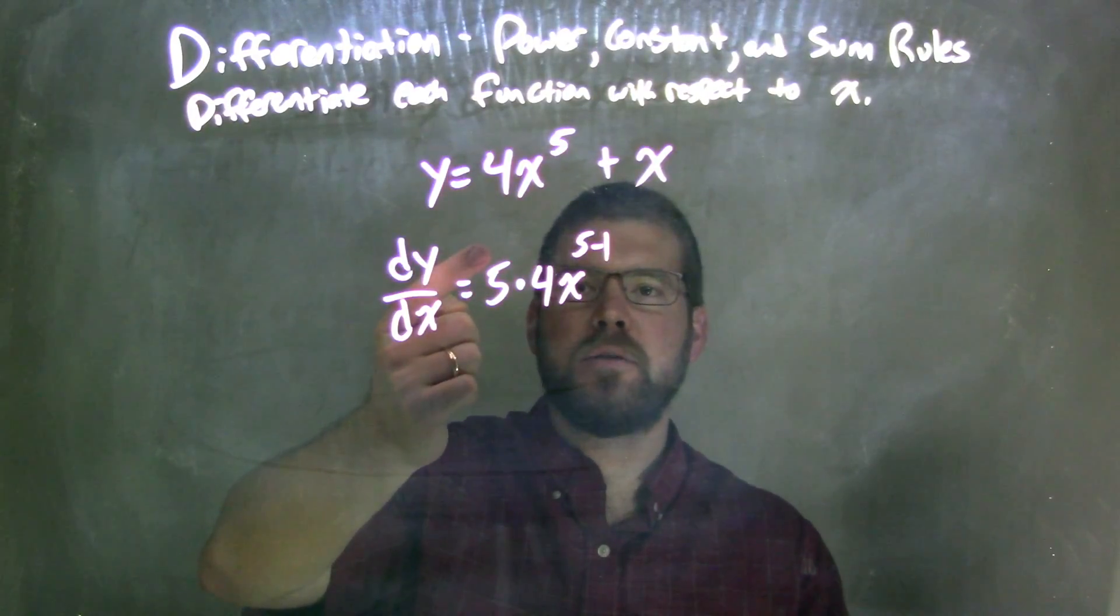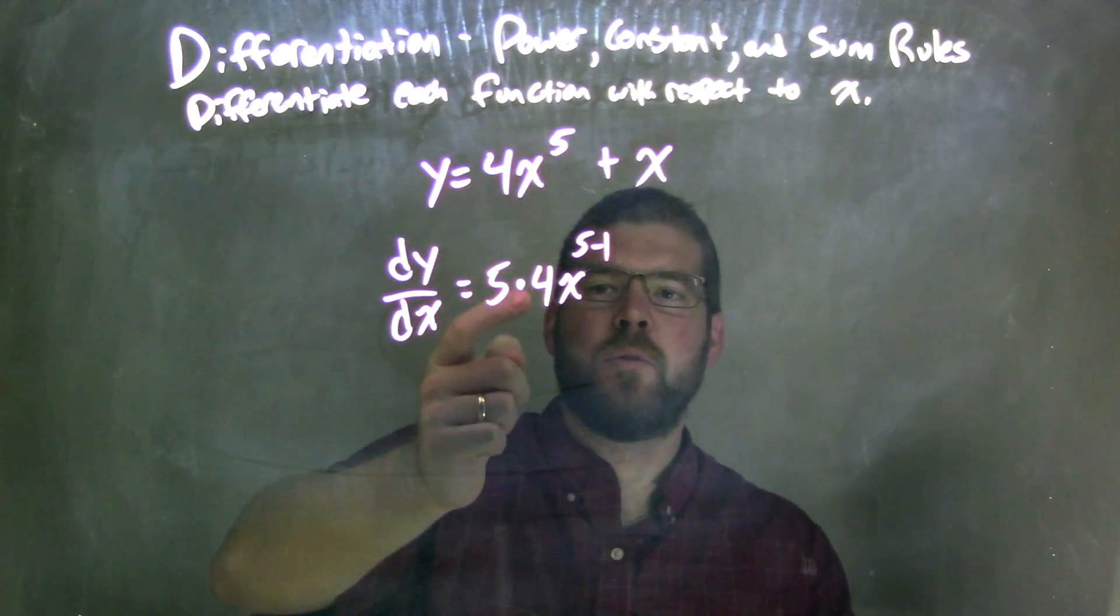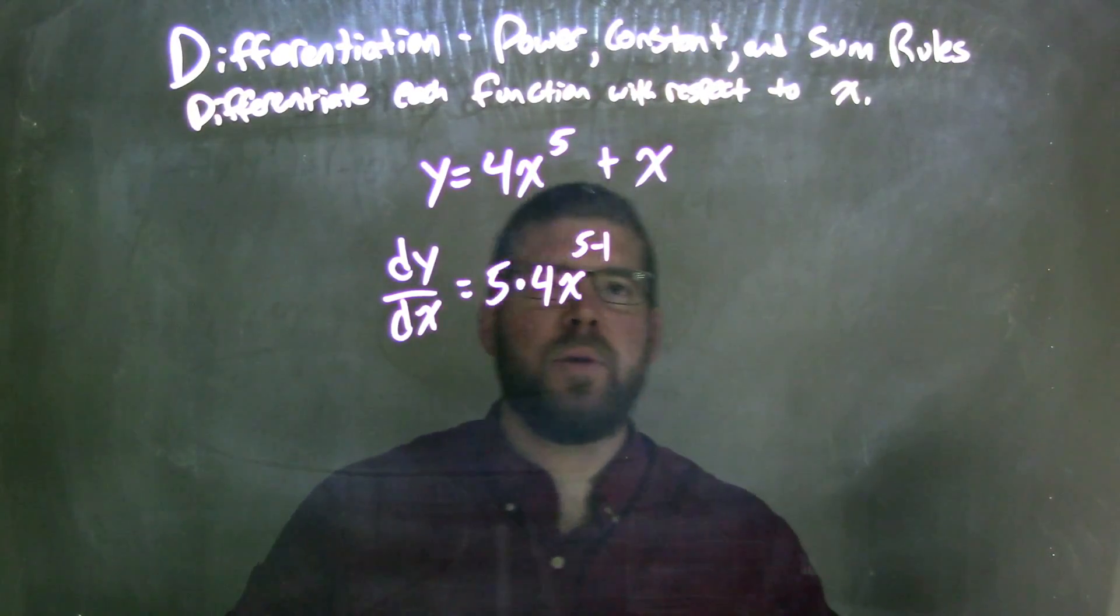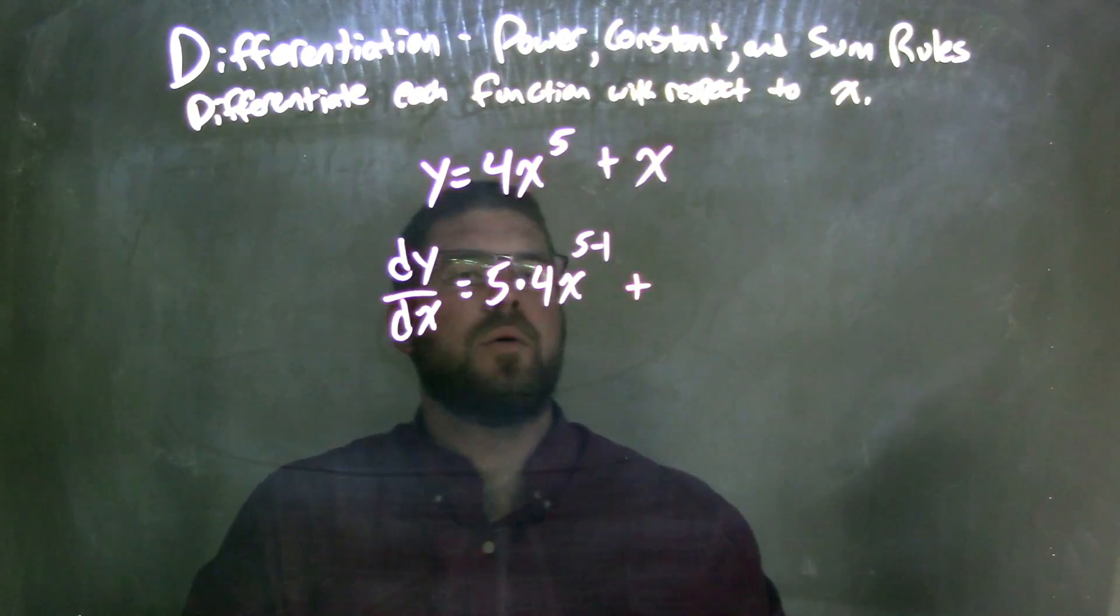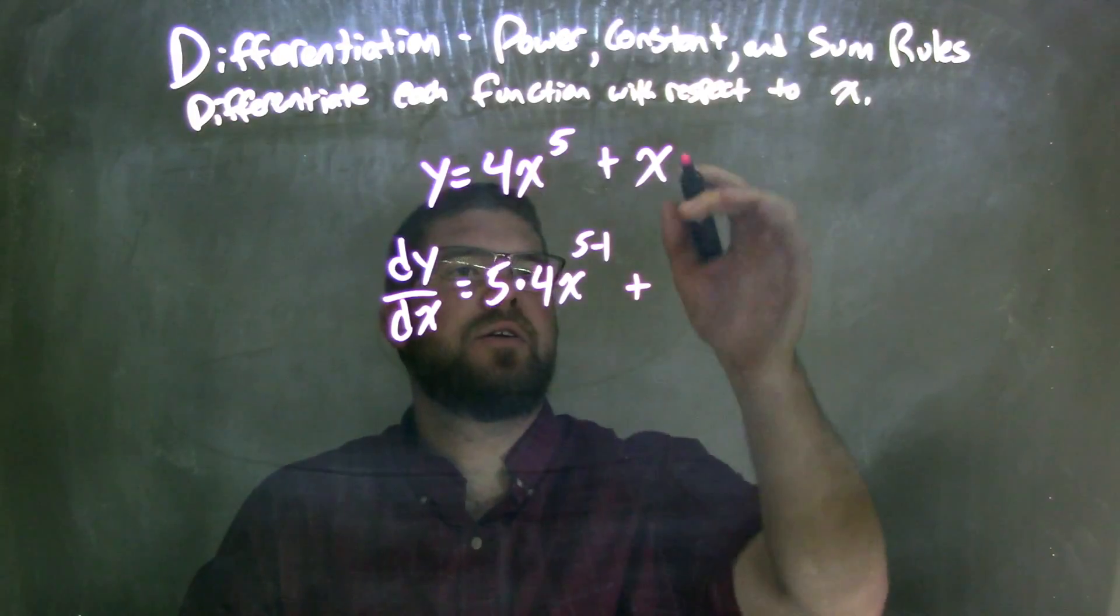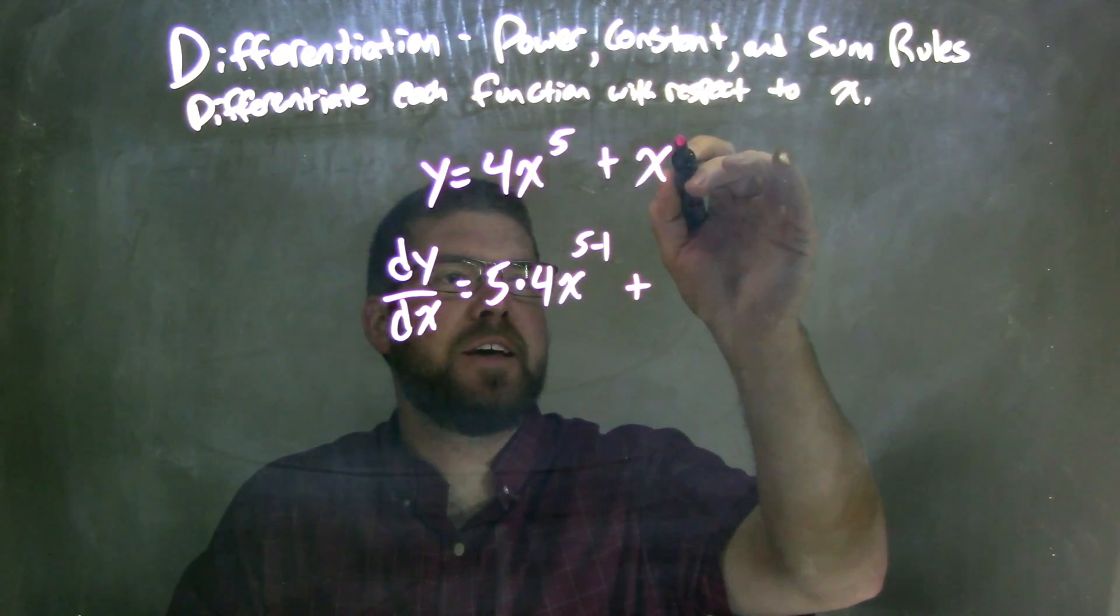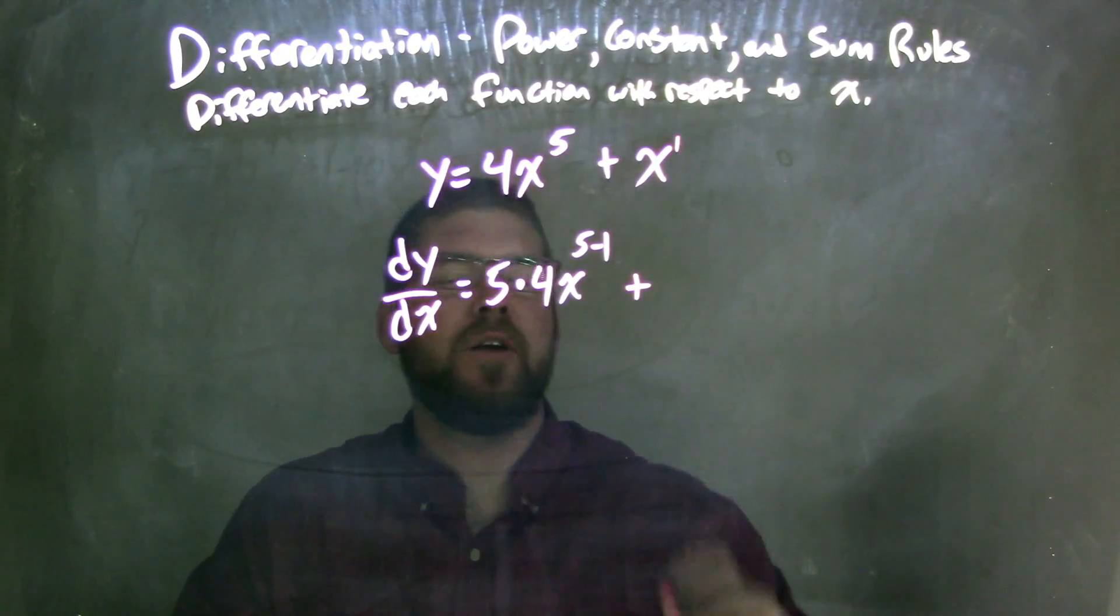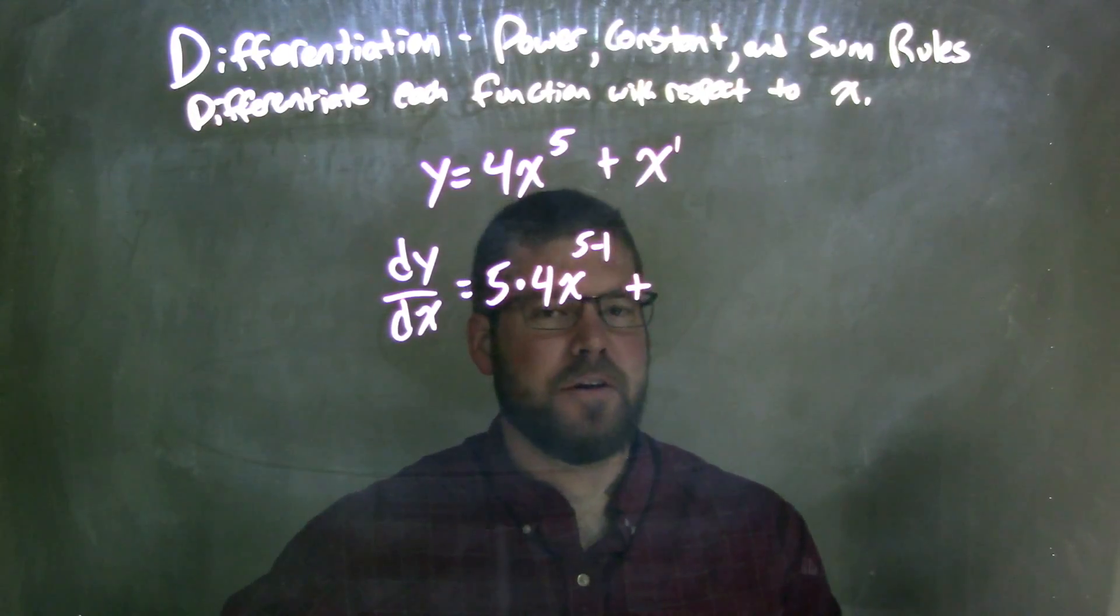So we bring it down out front, and then for multiplication, then we subtract the exponent by 1 plus, and we do the same thing here with x. We imagine there's a 1 out front, if you don't know the derivative of x being just 1.